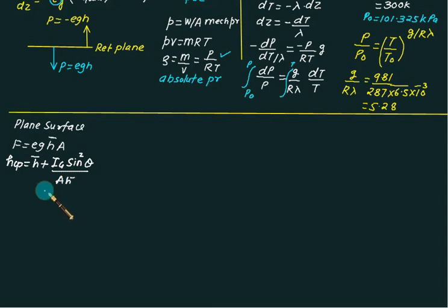Right hand side second term is positive. So h CP is always greater than h bar. It means that the center of pressure will lie always below the center of gravity, except theta equals 0.